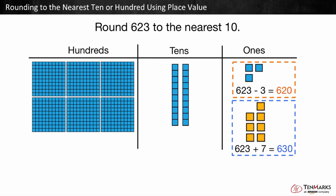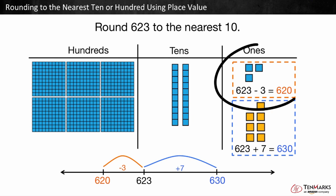Which ten is 623 closest to? 620. 623 is only three ones away from 620 compared to seven ones away from 630. So 623 rounded to the nearest ten is 620.